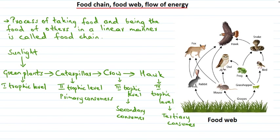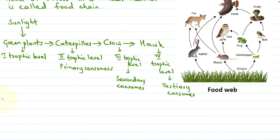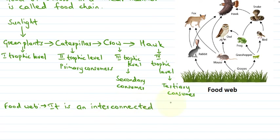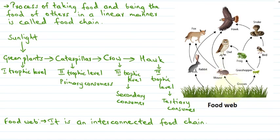Now, what is a food web? An interconnected food chain is called a food web. As we can see in this diagram, this is a food web — different food chains are interconnected with each other. There are several food chains present, and such an arrangement is known as a food web.